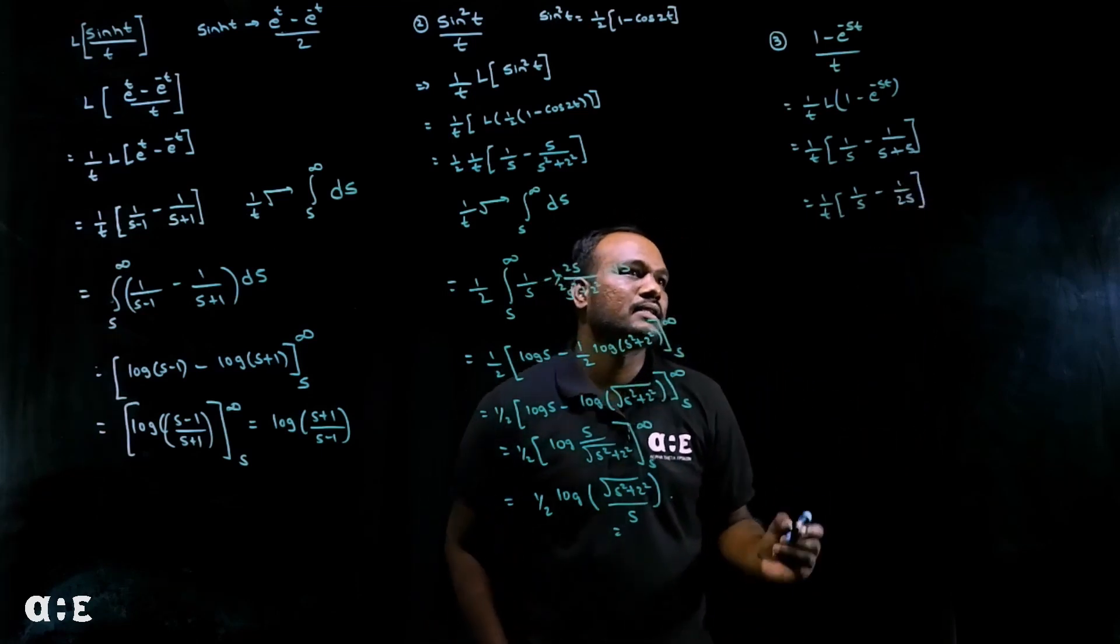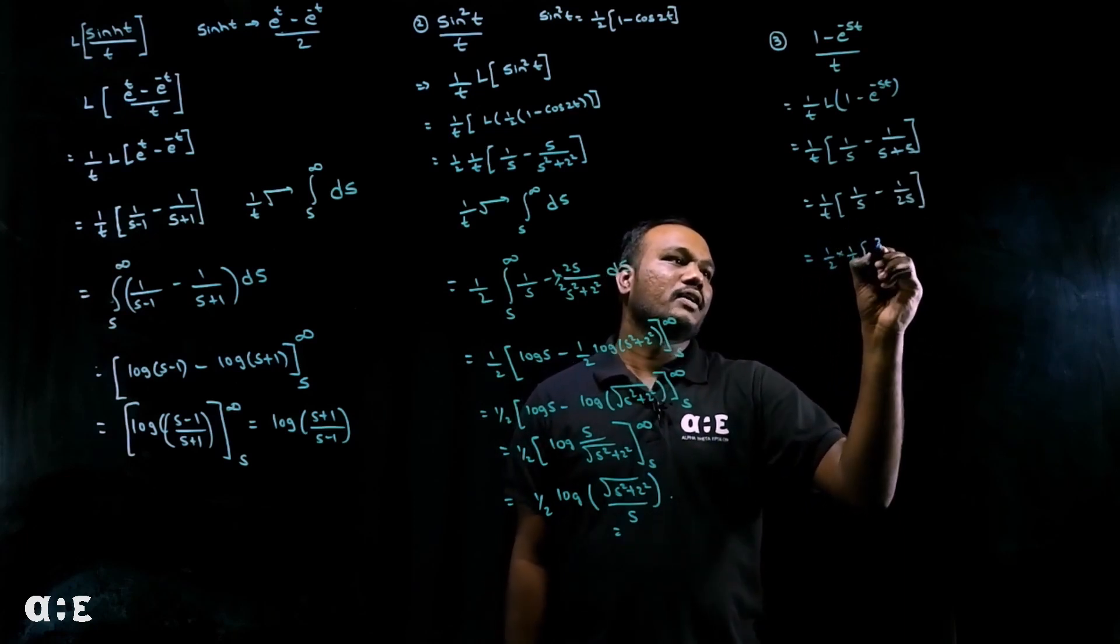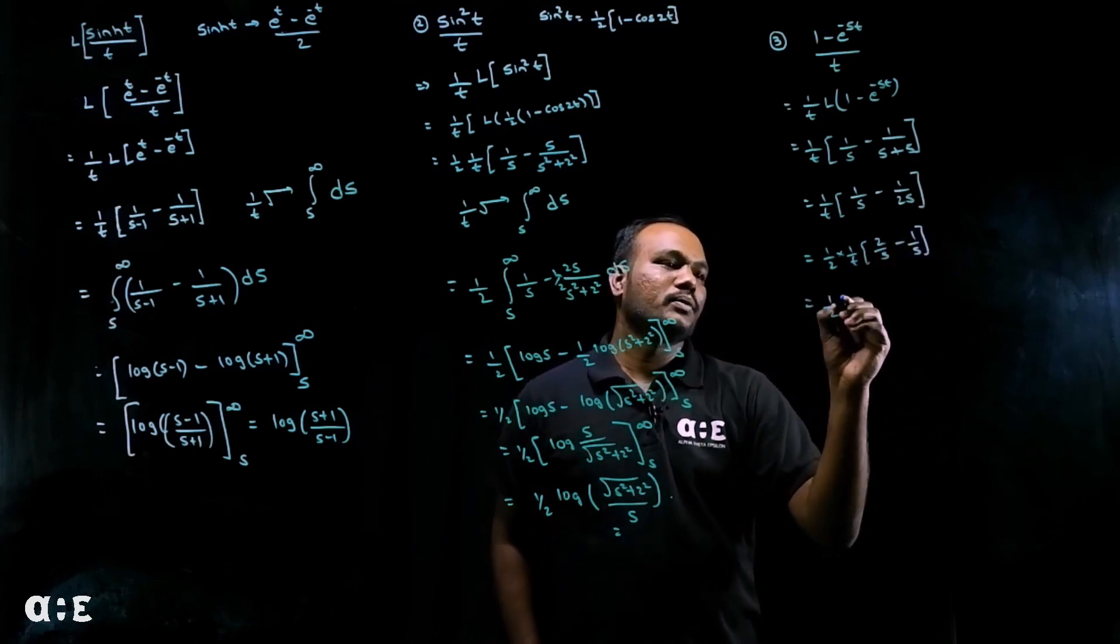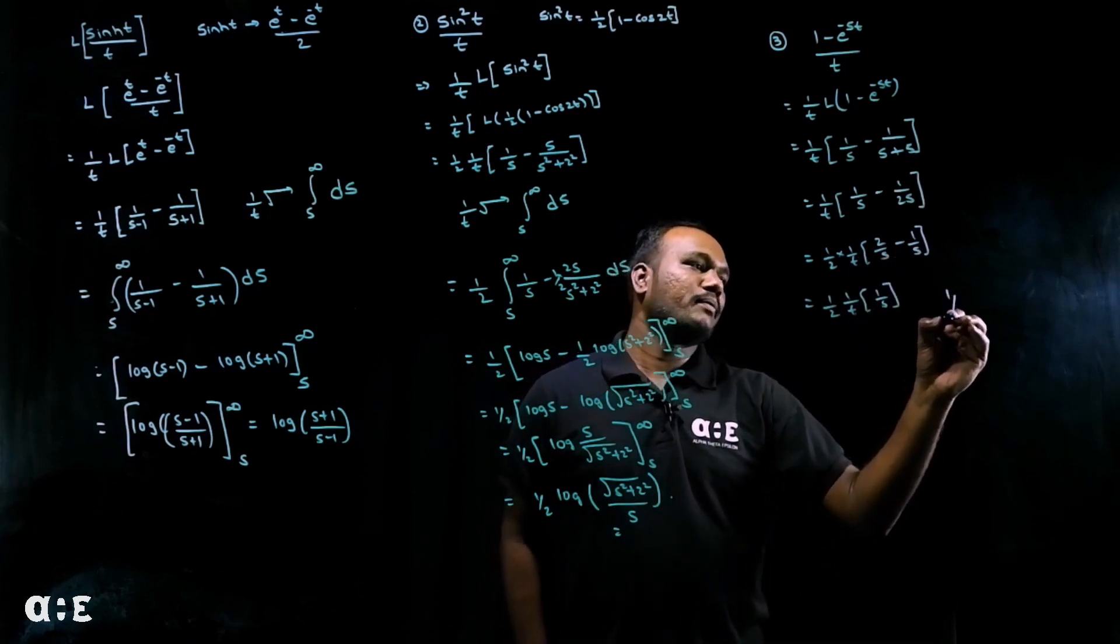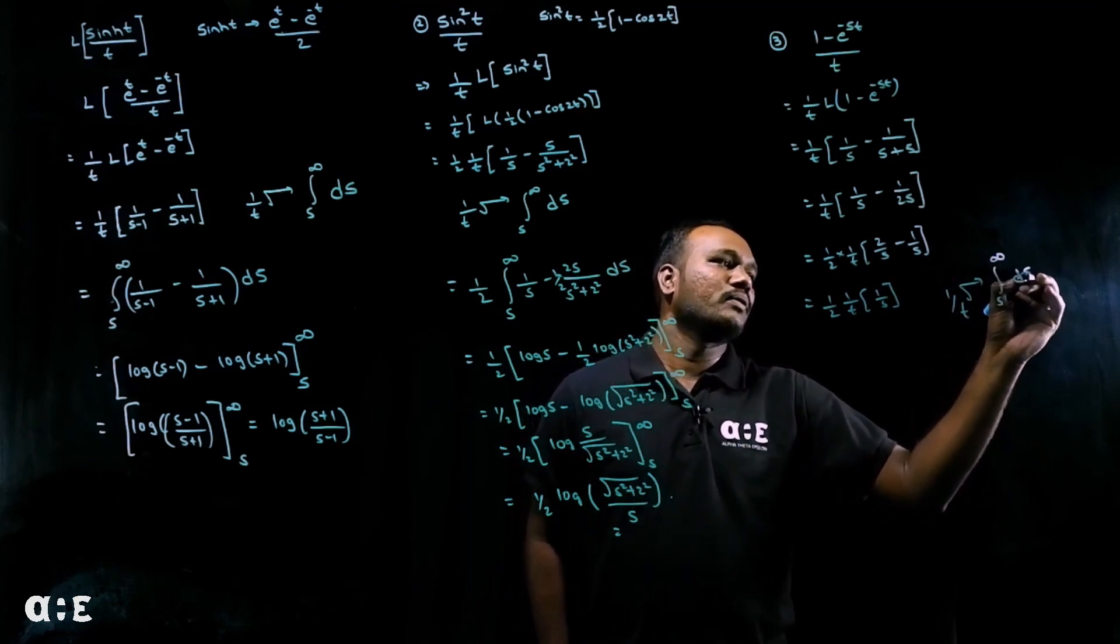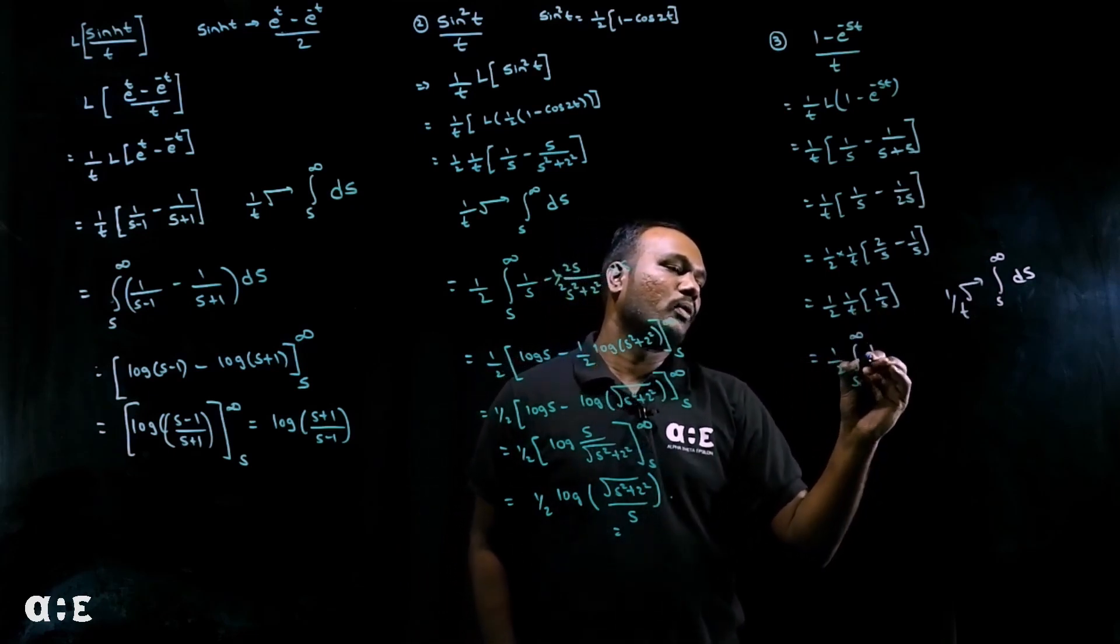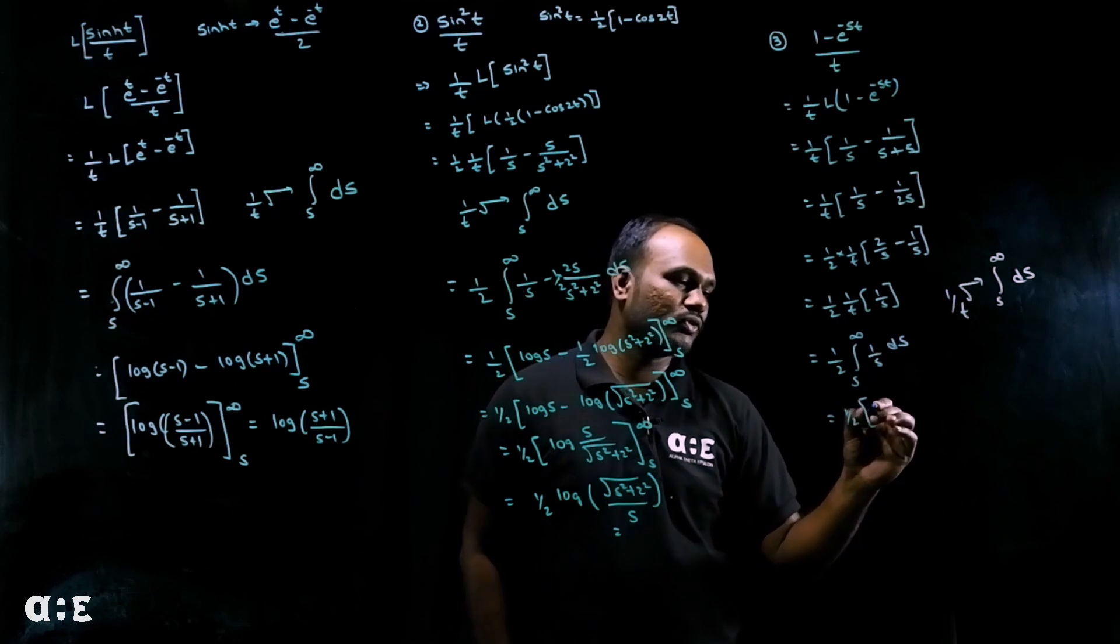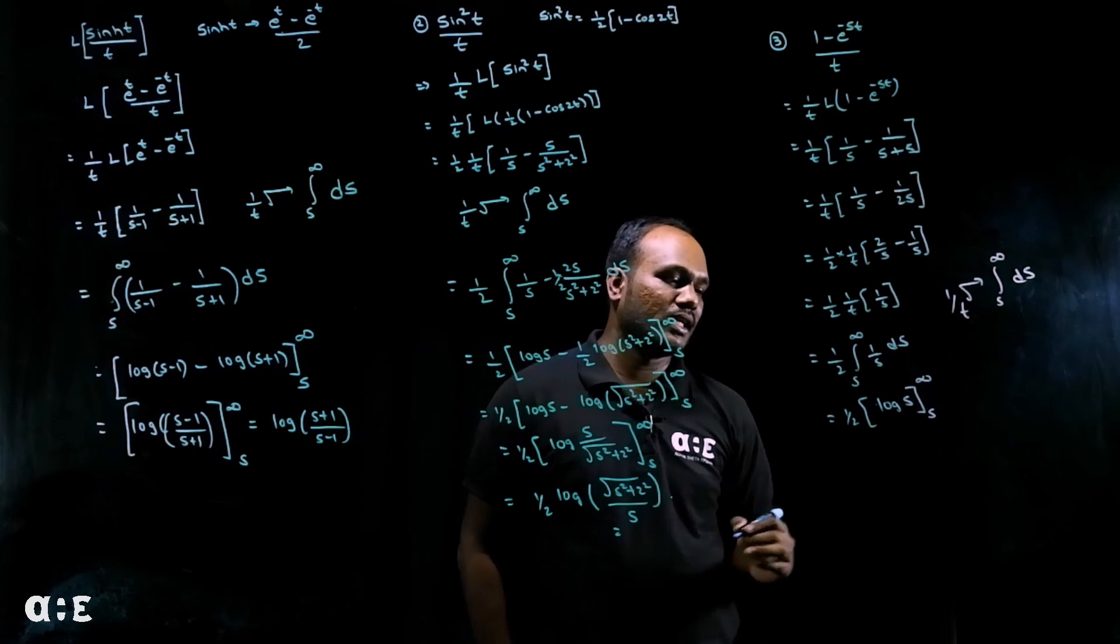So what do I get? I get one over t times one by s minus one over 2s. So how can we solve it? Let's take half common. So one by two times one by t - here I'll get two by s minus one by s. Two by s minus one by s is one by s, isn't it? Now I need to eliminate one by t by integration from s to infinity with respect to ds. So half times integration s to infinity: one by s with respect to ds. What I'll get? One by s integration is log s from s to infinity.